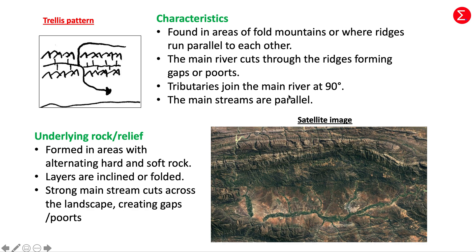Tributaries join the main stream or main river at right angles, or 90 degrees, and the main streams are parallel. The underlying rock strata associated with the trellis pattern includes alternating hard and soft rock where layers are inclined or folded, and a strong mainstream cuts across the landscape creating gaps or ports.